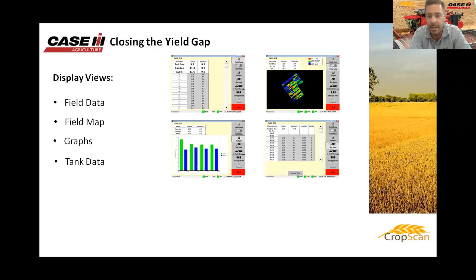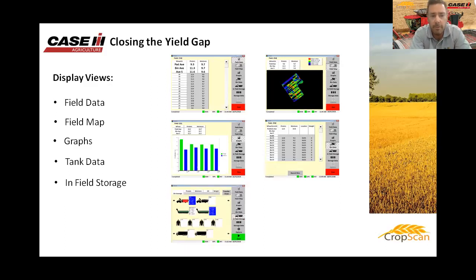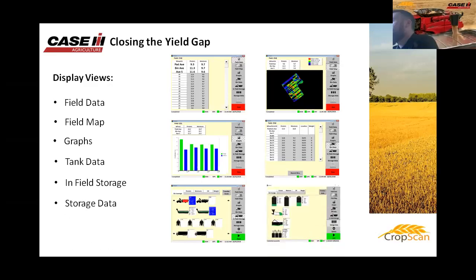That data is also displayed in a table format showing protein, moisture, location, and volume of grain for each tank load. The virtual icons tool is great for grain logistics — helping growers with in-field storage like chaser bins, mother bins, and field bins to better manage grain in the field. Before grain is delivered to the elevator or silo, growers are capturing variability to make better marketing decisions. The storage data tab provides a real-time running stack average of what's being imported into storage locations, enabling better marketing decisions.